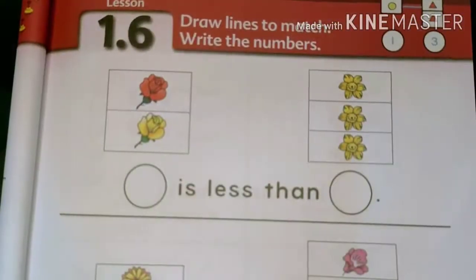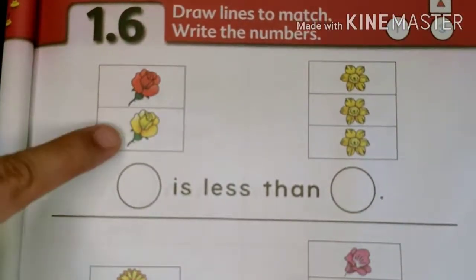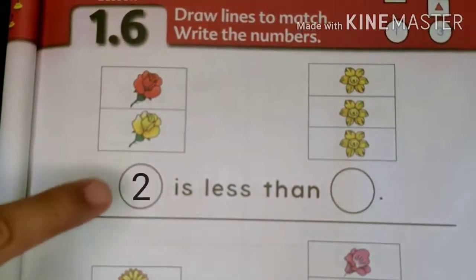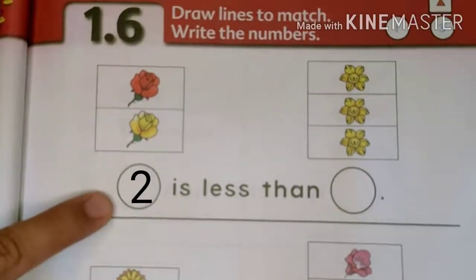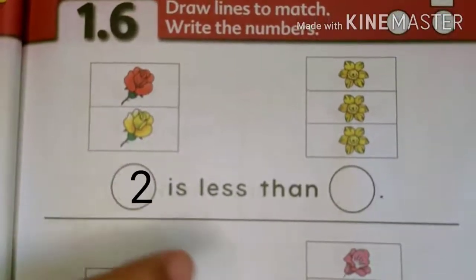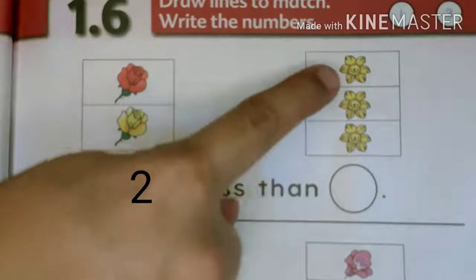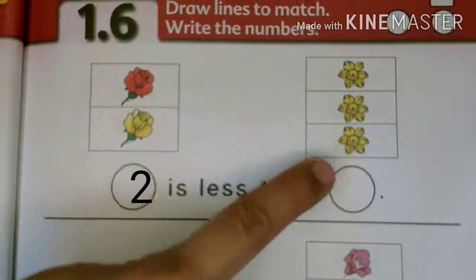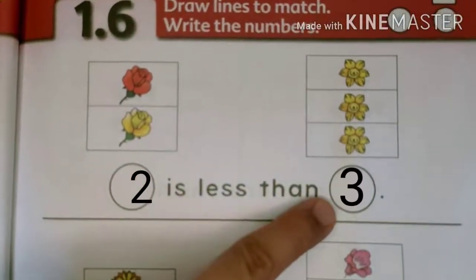Let's take a look at this page. One, two. We have two flowers. Let's count on the other side. One, two, three. We have three flowers on the right side.